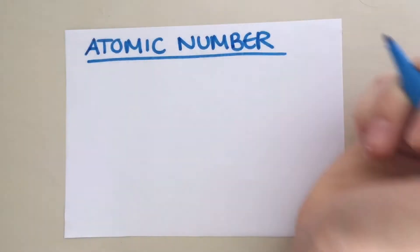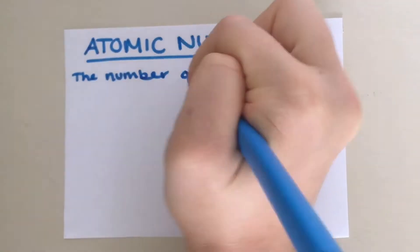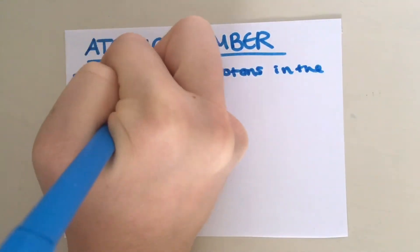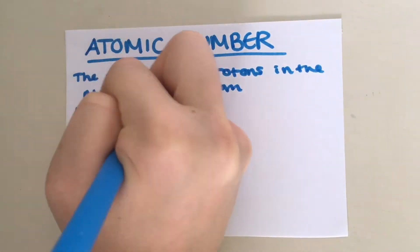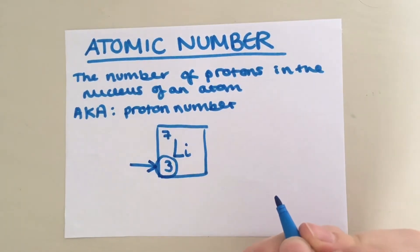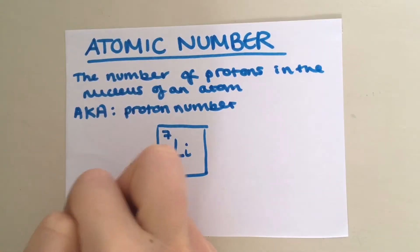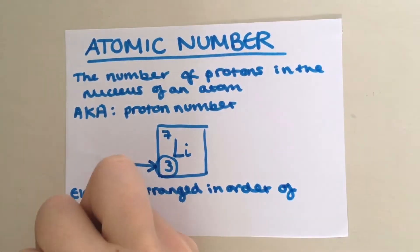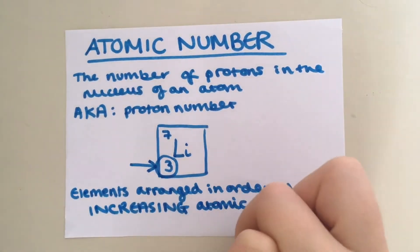Now let's take a look at atomic number, which is defined as the number of protons in the nucleus of an atom. Therefore, it is also known as proton number. On your periodic table, it can be identified as the bottom number. Elements are arranged in order of increasing atomic number in the periodic table.